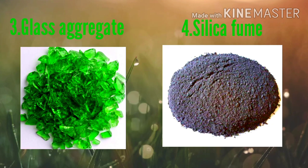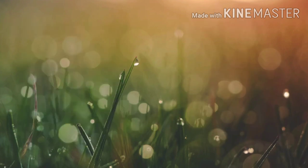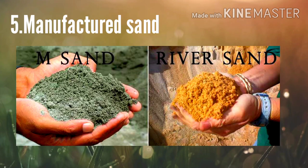The next material is green aggregate, also known as glass aggregate, and it is produced from environmental waste. The water absorption of green aggregate is very large. The next material is silica fume. The particle size of silica fume is 100 times smaller than ordinary Portland cement, and due to this, it improves the binding property of concrete.